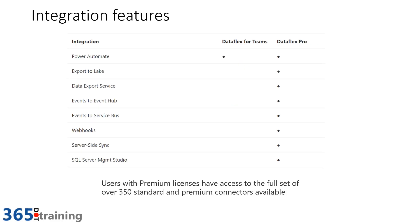For integration, Power Automate is the star of the show and the centerpiece for any integration from a Dataflex application. With a standard Office license you have access to all standard connectors; with a Power Automate or Power Apps license you add premium connectors, bringing the total to over 350 services for integration. Features like export to data lake, publishing events, or web hooks require upgrading to Dataflex Pro for those more advanced integration capabilities.